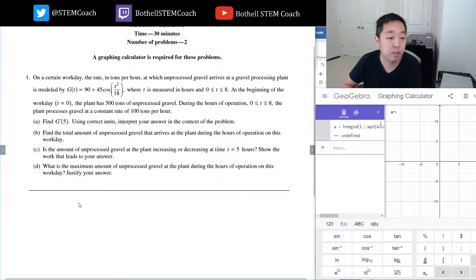So this is the rate in tons per hour. For part A, g'(5), first let's just compute the derivative. g'(t): derivative of 90 is zero. The derivative of 45 cosine stays 45, derivative of cosine is negative sine.